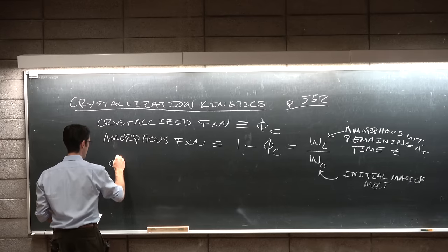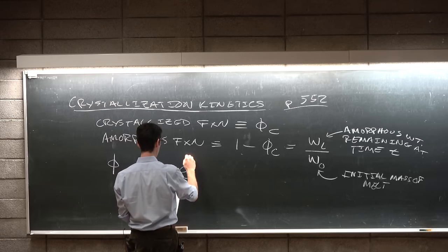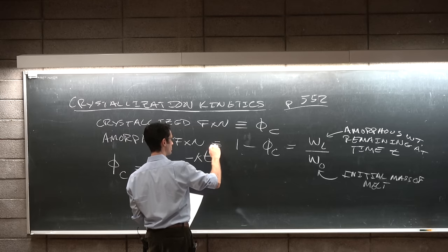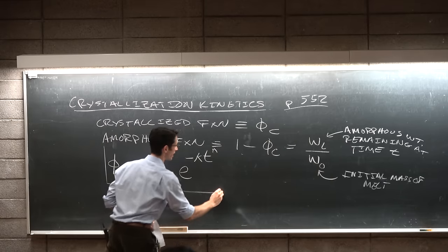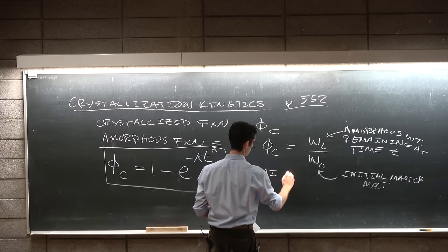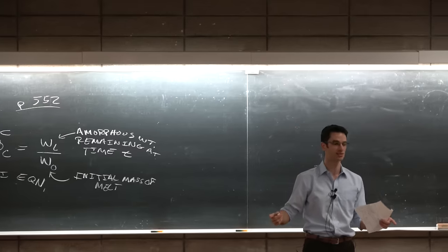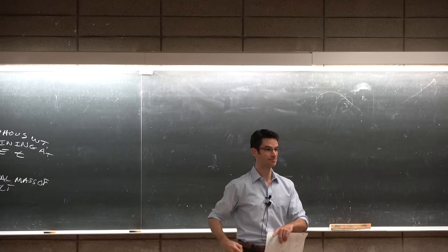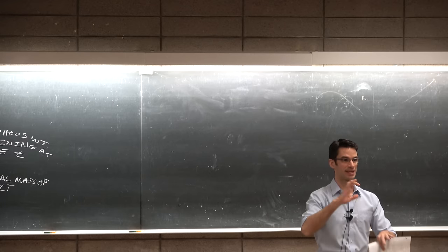Then we can write something for phi sub c which is 1 minus e to the minus k times time to the n. So look at all of these compounded exponents we have here. And this is called the Avrami equation and it has different forms depending on whether or not we have spontaneous nucleation or simultaneous nucleation or spontaneous nucleation at different times. So whether or not all of the spherulites are crystallizing all at the same time or if they kind of happen at random times.